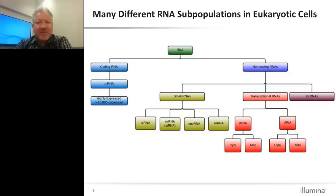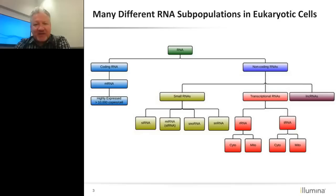In eukaryotic cells there are many different RNA subpopulations. On the left are the coding RNAs — messenger RNAs — some of which can be expressed at more than 10,000 copies per cell. The explosion in the RNA world over the last 15 to 20 years has been in the non-coding RNAs. Of course, we've known about ribosomal RNA and tRNA for a long time, but the whole field of lncRNAs and small RNAs has really exploded in the last decade, making the interest in doing RNA-Seq even greater.